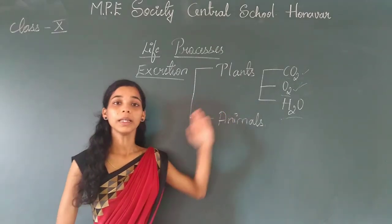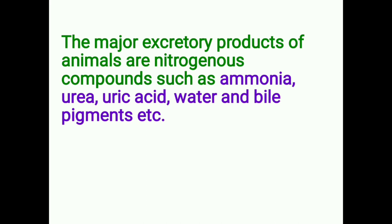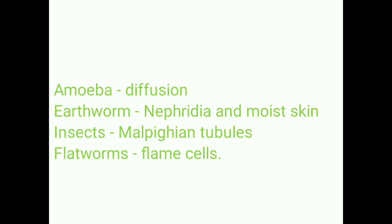Now we will learn about excretion in animals. Animals have definite excretory organs through which waste products and water are eliminated. Different animals have different excretory organs based on the nature of their diet and constitution. The major excretory products of animals are nitrogenous compounds such as ammonia, urea, uric acid, water, and bile pigments. In single-celled organisms such as amoeba and paramecium, the main waste products are carbon dioxide, excess water, and nitrogenous waste. Carbon dioxide is removed by diffusion through the cell membrane, and nitrogenous waste and excess water are removed by contractile vacuoles.